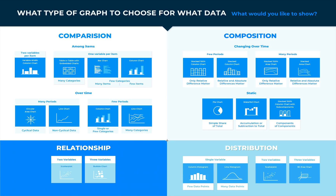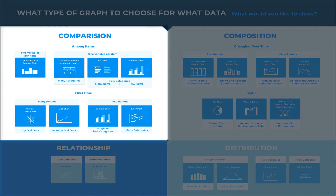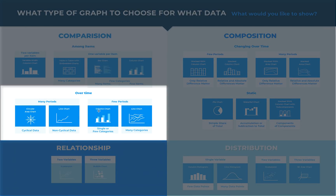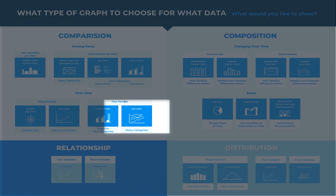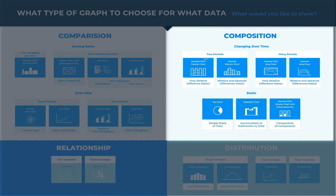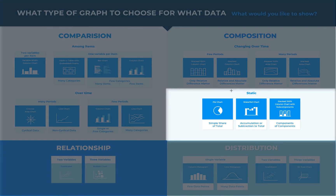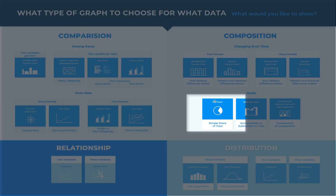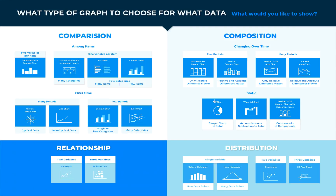This is a chart selection diagram created by Dr. Andrew Abella and improved by us, that should help you pick the right chart for your data type. Just answer the questions mentioned above. For example, if you want to compare stock prices for five major US companies, go to the comparison group. You want to compare over time and you have many categories — a line chart suits you best. Or if you want to visualize your customers gender-wise, that is a composition. This composition is static and shows a simple share of total — you need a pie chart. Easy as that.